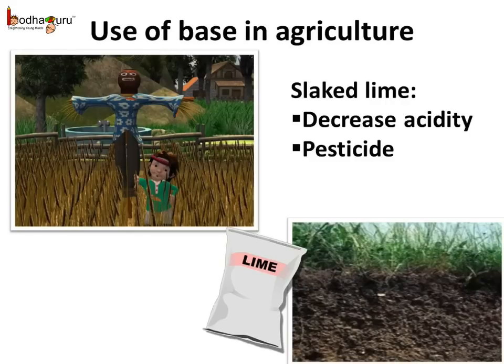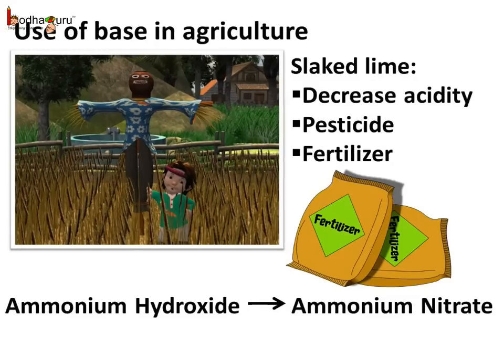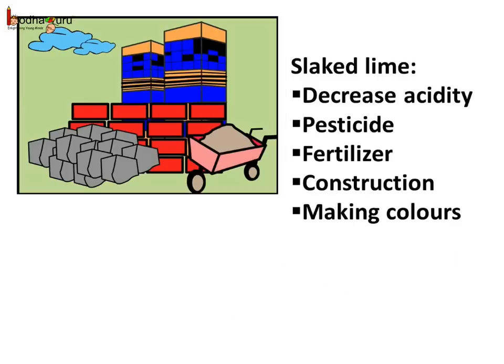What is the use of base? Base is used in many ways in agriculture. Base is used to decrease the acidity of soil to make it fertile again — generally slaked lime, which is calcium hydroxide, is used for this. Slaked lime is also used to make pesticides. Bases like ammonium hydroxide are used to make fertilizers. Slaked lime is also used in construction for making colors and paints.